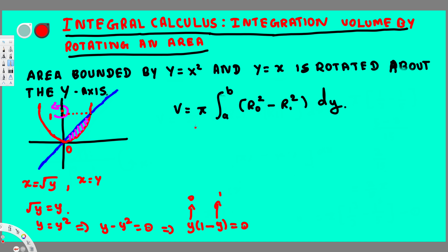To find the outer radius, we throw an arrow from the rotating axis — the y-axis — and wherever the arrow touches last, that's the outer radius. The curve y = x² in terms of y is x = √y, and the straight line gives x = y. The outer radius is x = √y and the inner radius is x = y.